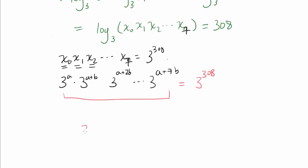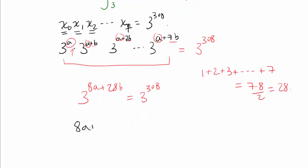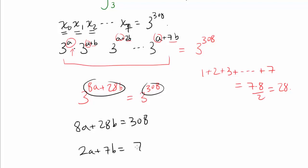We can simplify the product further. We have 8 copies of a (one per term), and the b contributions are 1b + 2b + ... + 7b. The sum of integers from 1 to 7 is 7 × 8 / 2 = 28. So 3^(8a + 28b) = 3^308, meaning 8a + 28b = 308. Dividing by 4, we get 2a + 7b = 77.